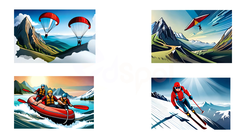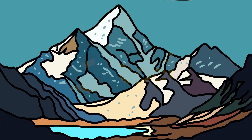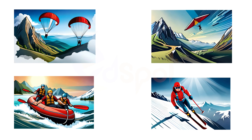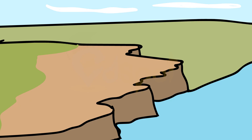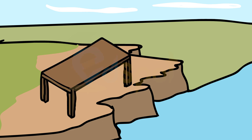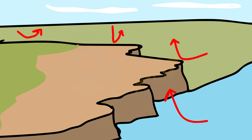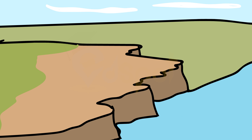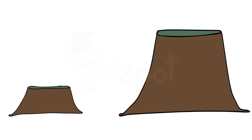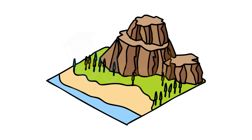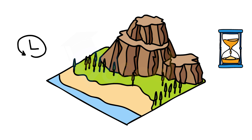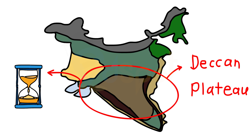Tourists visit the mountains for their scenic beauty. Several sports like paragliding, hang gliding, river rafting, and skiing are popular in the mountains. Can you name some places in the Himalayas associated with these sports? A plateau is an elevated flat land — it is a flat-topped tableland standing above the surrounding area. A plateau may have one or more sides with steep slopes. The height of plateaus often varies from a few hundred meters to several thousand meters.